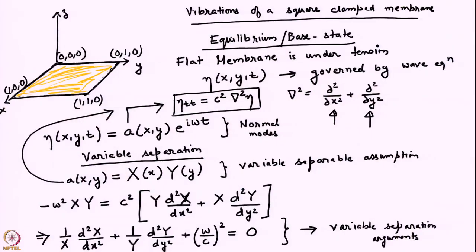We were looking at vibrations of a clamped square membrane in 2 dimensions, governed by a linear 2D wave equation. We had started with doing normal modes on it, using a Cartesian coordinate system. Since the membrane was clamped at all ends, it allowed us to do variable separation.